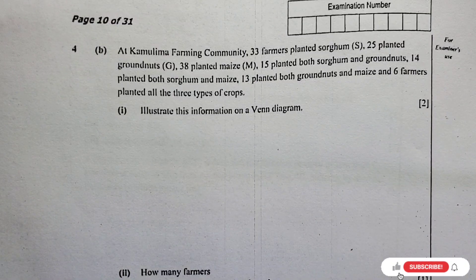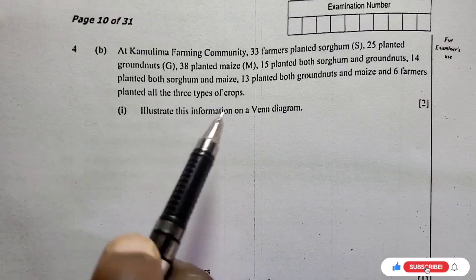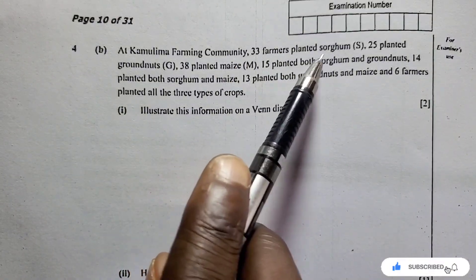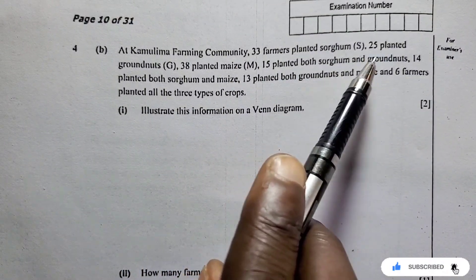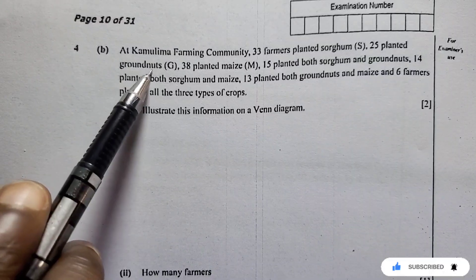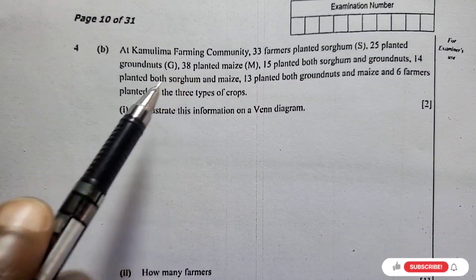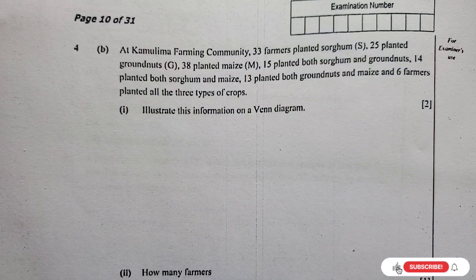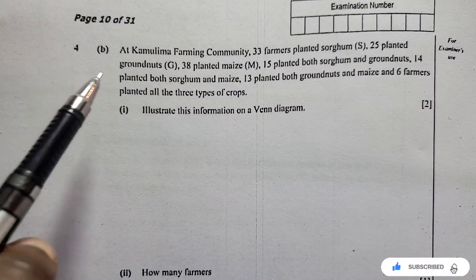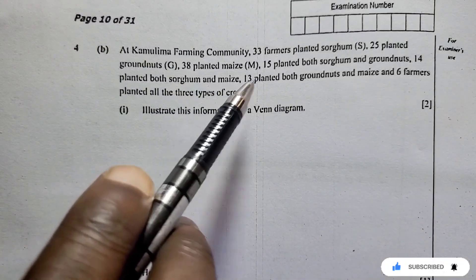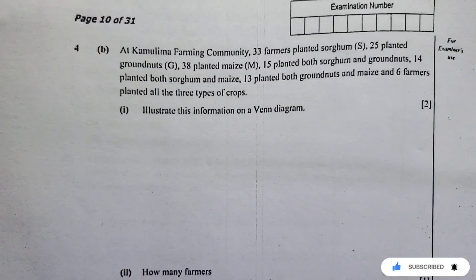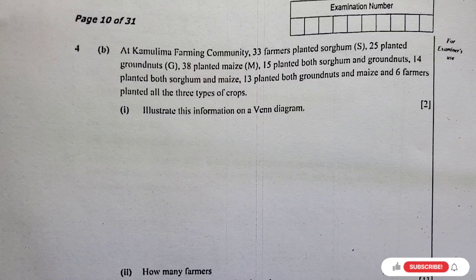Question 4B: At Kamulima farming community, 33 farmers planted sorghum (S), 25 planted groundnuts (G), 38 planted maize (M). 15 planted both sorghum and groundnuts, 14 planted both sorghum and maize, 13 planted both groundnuts and maize, and 6 farmers planted all 3 types of crops.